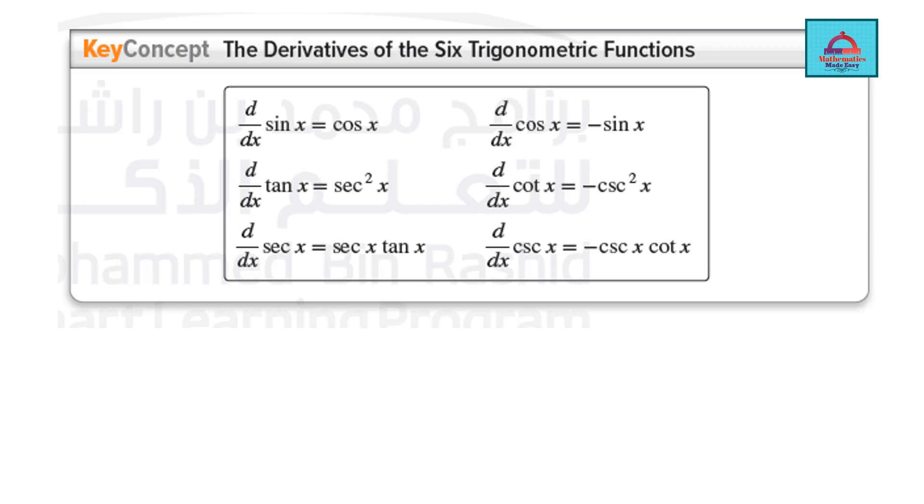First we have a formula sheet for derivatives of the 6 trigonometric functions. If you get sine, cos, tan, cot, secant, or cosecant in the question and you need to differentiate it, the formula is d by dx of sin x is cos x, and conversely d by dx of cos x is minus sin x. I will tell you a pattern here.